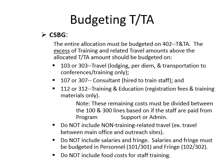Please note that these remaining costs must be divided between the 100 and 300 line items based on whether the staff are paid from program support or administration. Do not include non-training related travel — for example, travel between the main office and the outreach sites — that should not be budgeted in TNTA; it should be budgeted in the regular travel lines. Do not include salaries and fringe; those must be budgeted in personnel lines 101 or 301 and fringe lines 102 and 302. Also, do not include food costs for staff training.